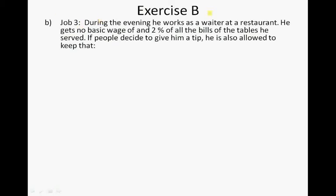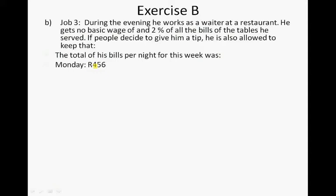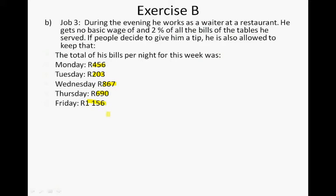In job three, he works as a waiter at a restaurant in the evenings. He gets no basic salary or wage; he gets 2% of the bills, and if people decide to give him a tip, he is allowed to keep it. The total bills per night this week were: Monday R4.56, Tuesday R2.03, Wednesday R8.67, Thursday R6.90, Friday R1,156, Saturday R2,719, and Sunday R1,853.